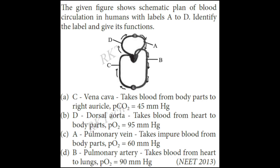The given figure shows a schematic plan of blood circulation in humans with levels A to D. Identify the level and give its function. Level C is Vena Cava.